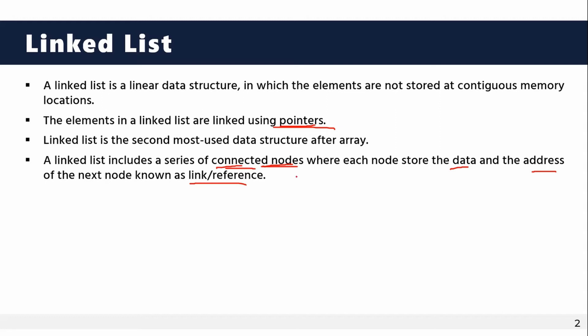Each node has two parts. The first part is the data, and the second part is the address link, which points to the next data.